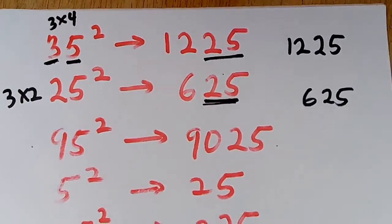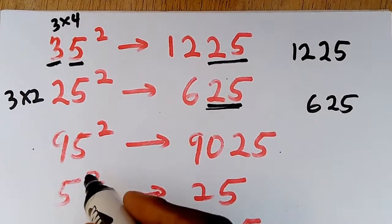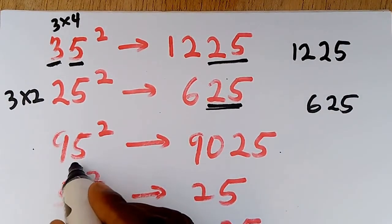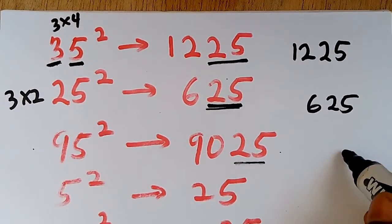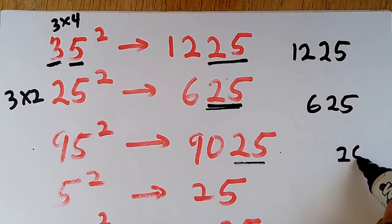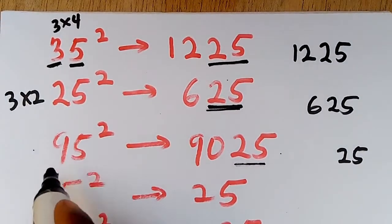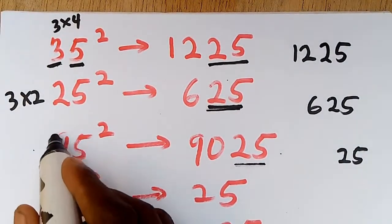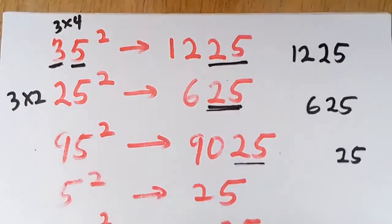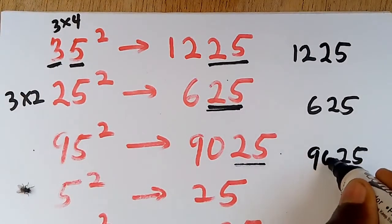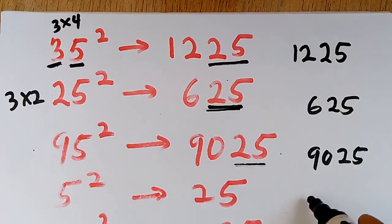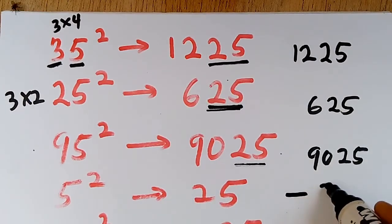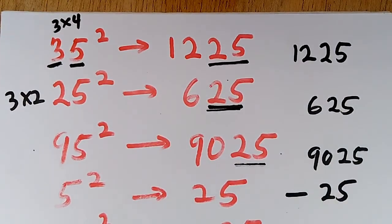For 95 squared, the last result is 25 — write the 25. Then the number next to 9 is 10, so 10 times 9 gives us 90. Write it in front: 9025. And for 5 squared, it's simply 25 — no problem there.